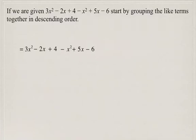Now, if we're given a polynomial such as 3x squared minus 2x plus 4 minus x squared plus 5x minus 6, the first thing we need to do, if we're going to add or subtract the like terms, is to group the like terms in descending order — meaning the exponents go from highest to lowest.